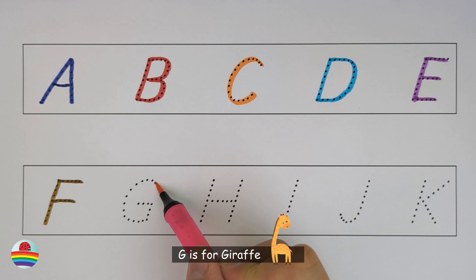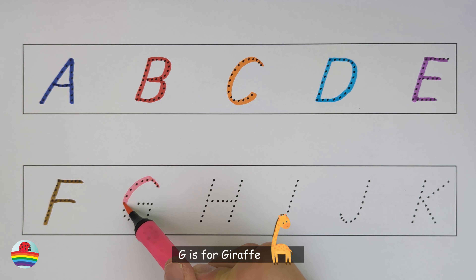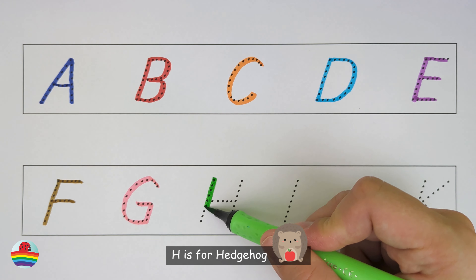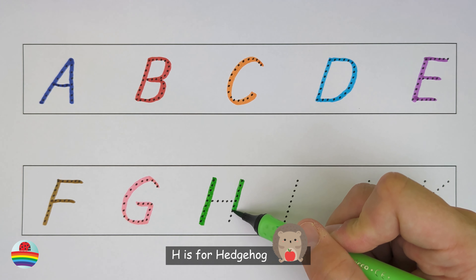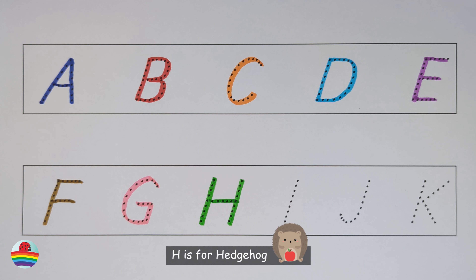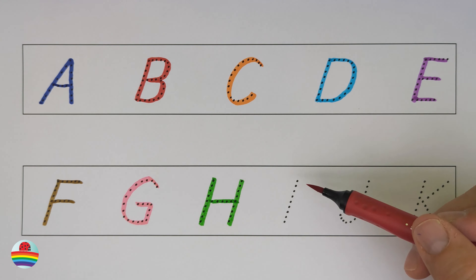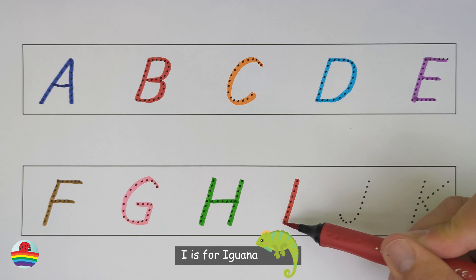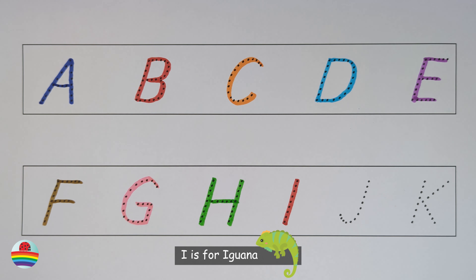G. G is for giraffe. G. H. H is for hedgehog. H. I. I is for iguana. I.